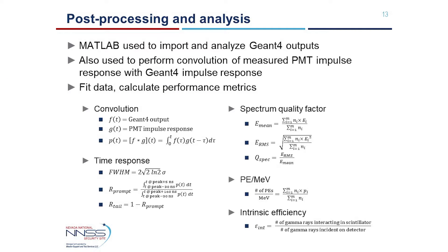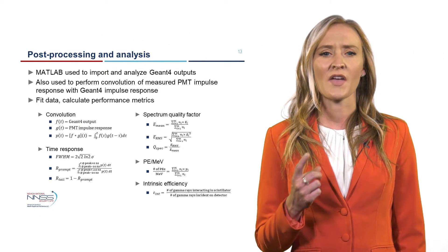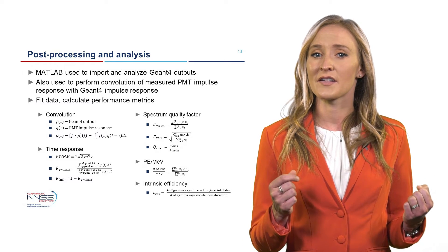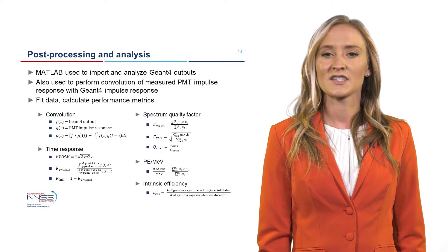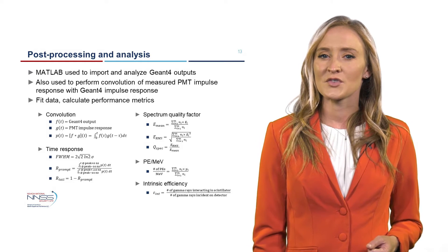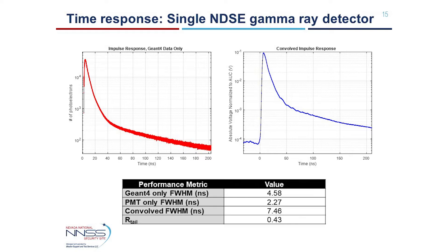MATLAB is used to import the Geant4 outputs, perform the convolution of the Geant4 impulse response with the PMT-only impulse response, fit the data as needed, and calculate the resultant performance metrics. These metrics include the full width half maximum and the ratio of the tail to total integrals, or R-tail, for the time response, and the number of photoelectrons per MeV, intrinsic efficiency, and spectrum quality factor, or Q-spec, capturing the gamma ray and photoelectron statistics. The Geant4 impulse response and the convolved impulse response for a single NDSC gamma ray detector are shown on the left in red and on the right in blue, respectively.